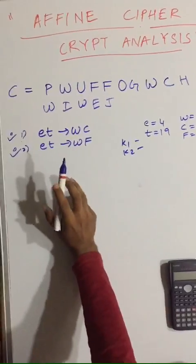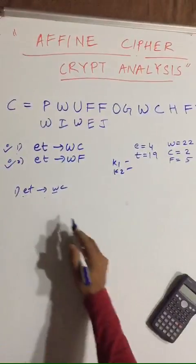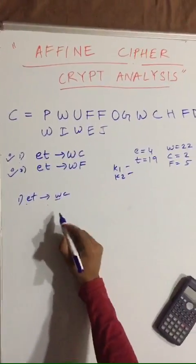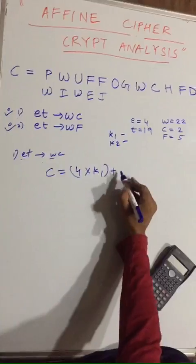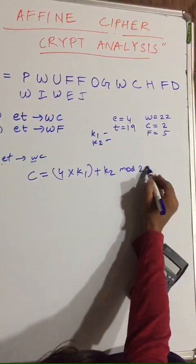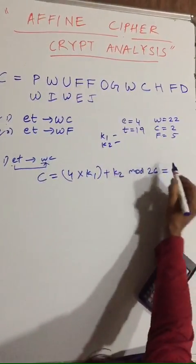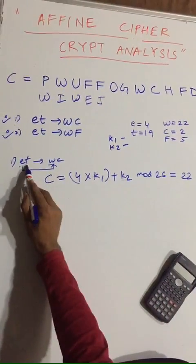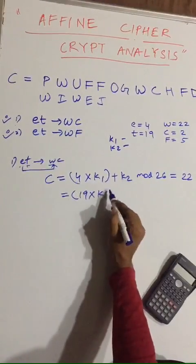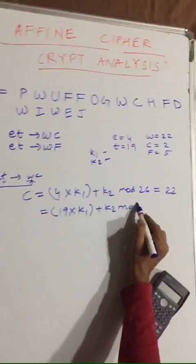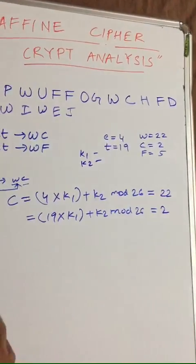For the first pair 'et'→'wc', both have k1 and k2. Using the affine cipher formula to generate ciphertext: 4·k1 + k2 mod 26 = 22 (since 'e' maps to 'w'). For the second value 't': 19·k1 + k2 mod 26 = 2, since 'c' is equal to 2.